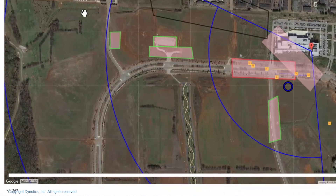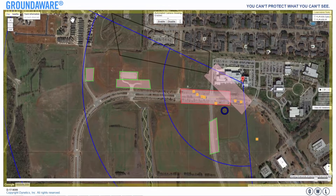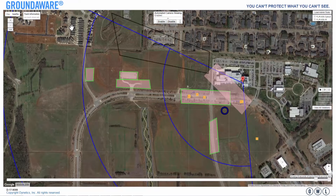Notice how the border of the interface is flashing red and yellow. This indicates that an alarm zone has just been violated.